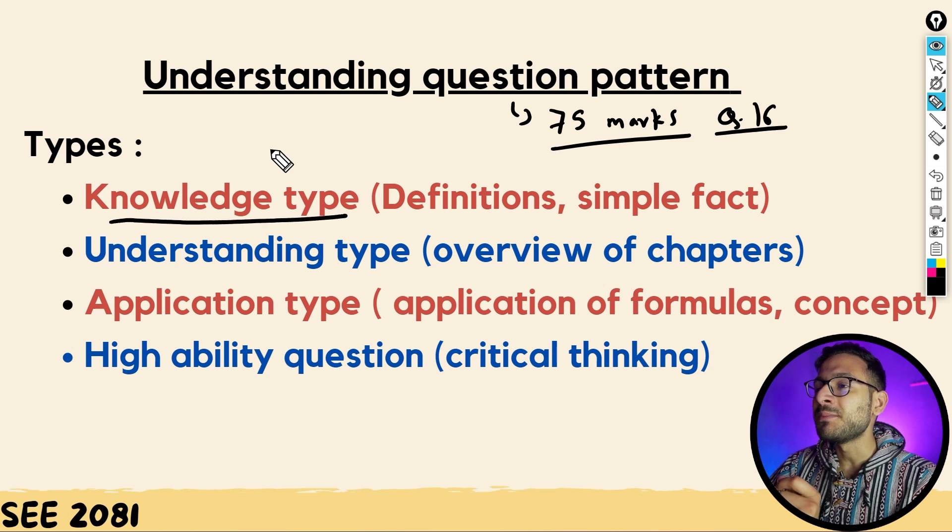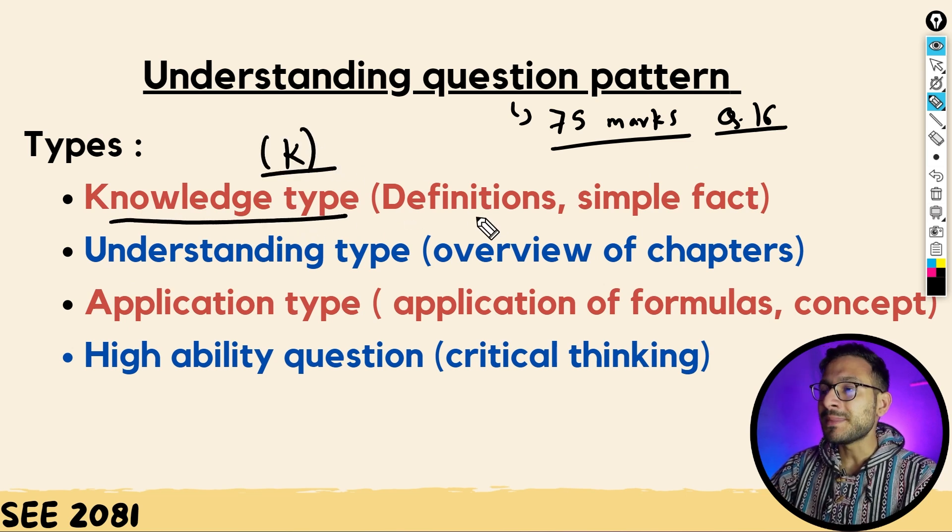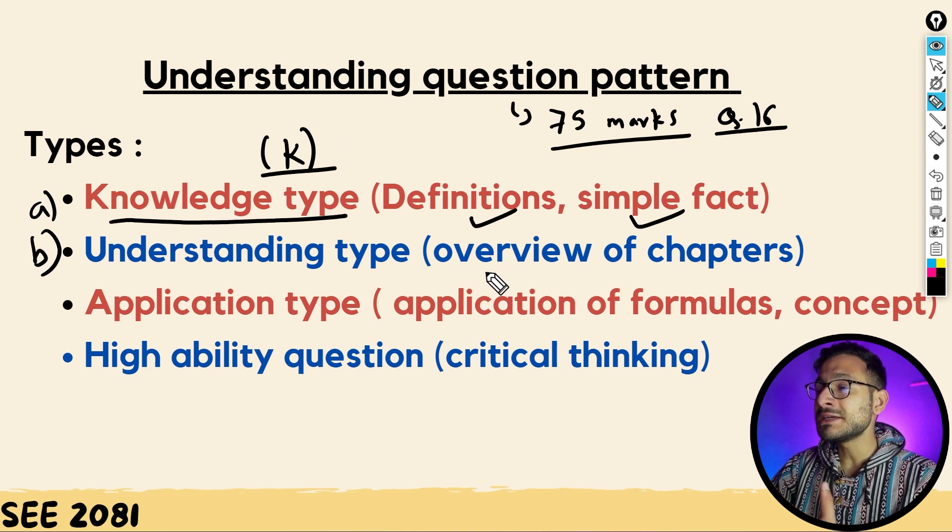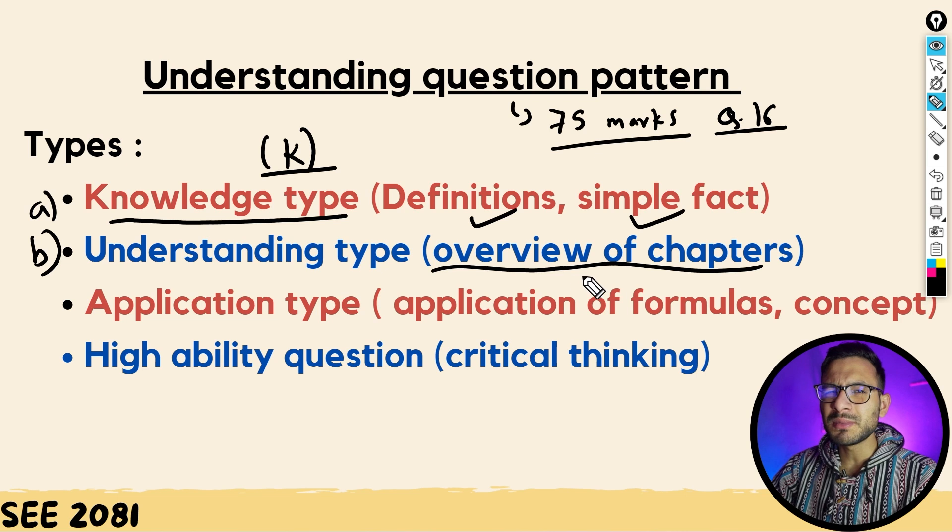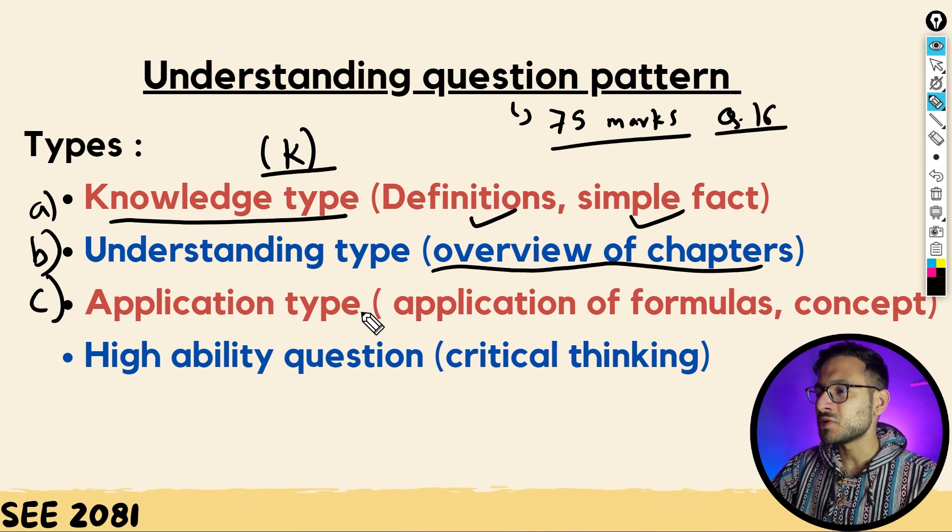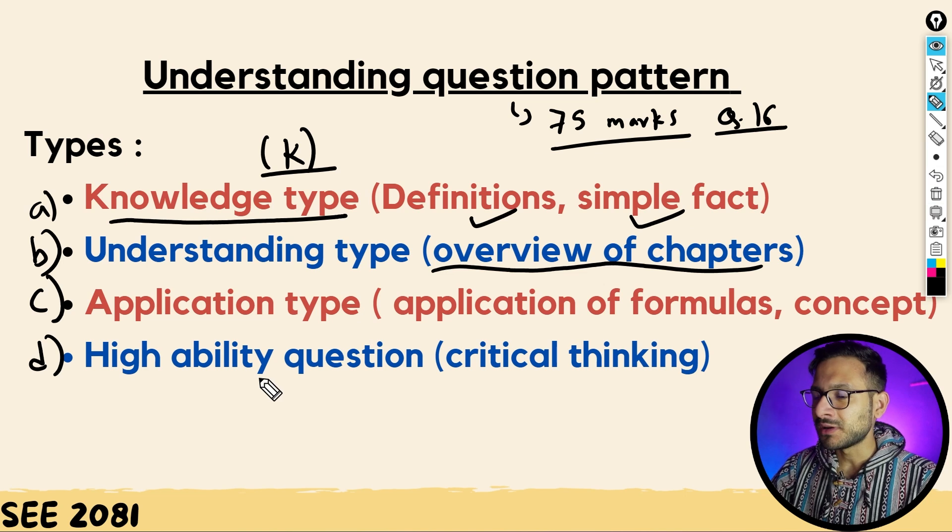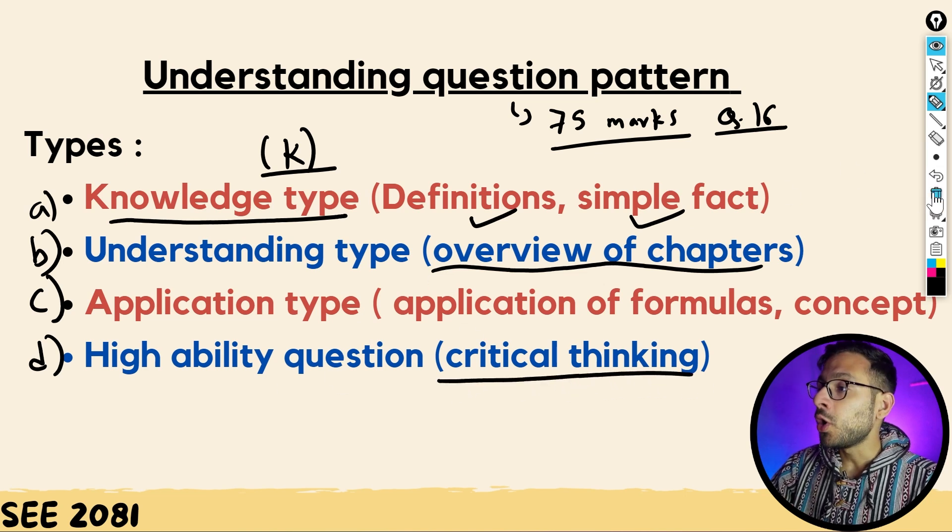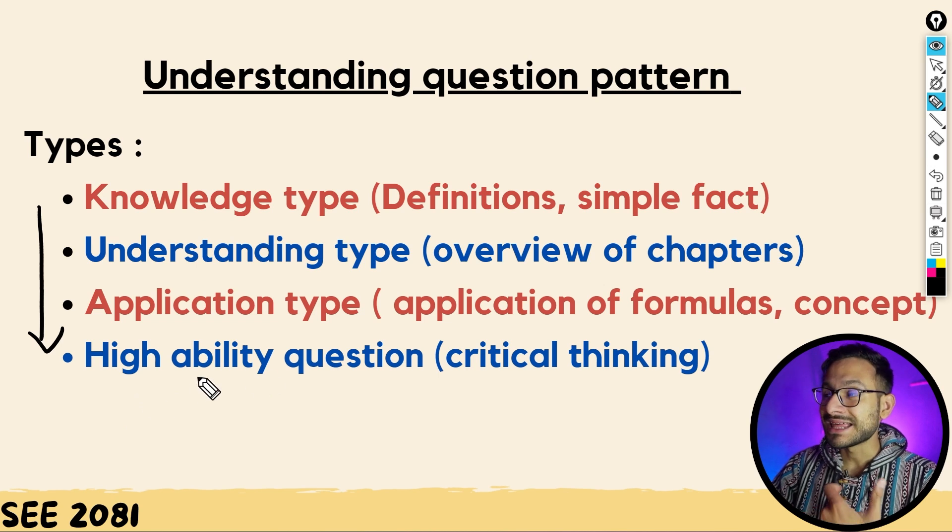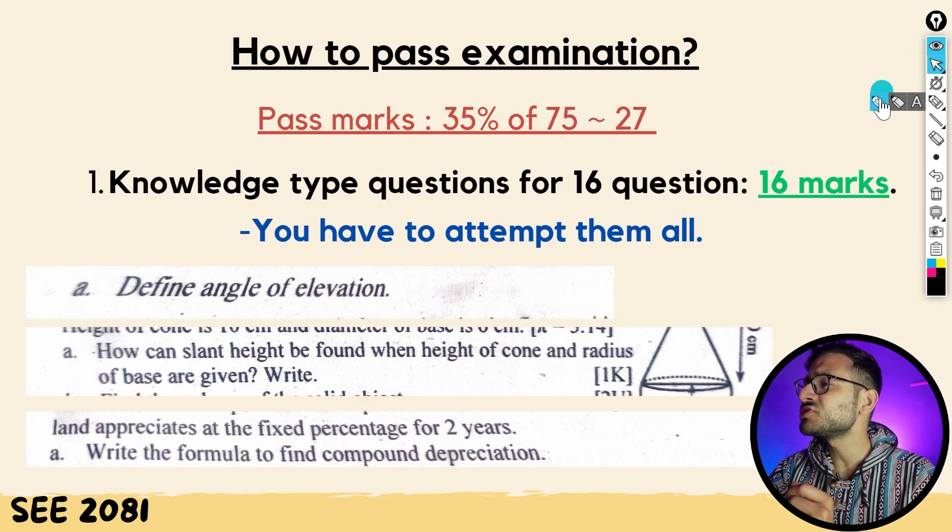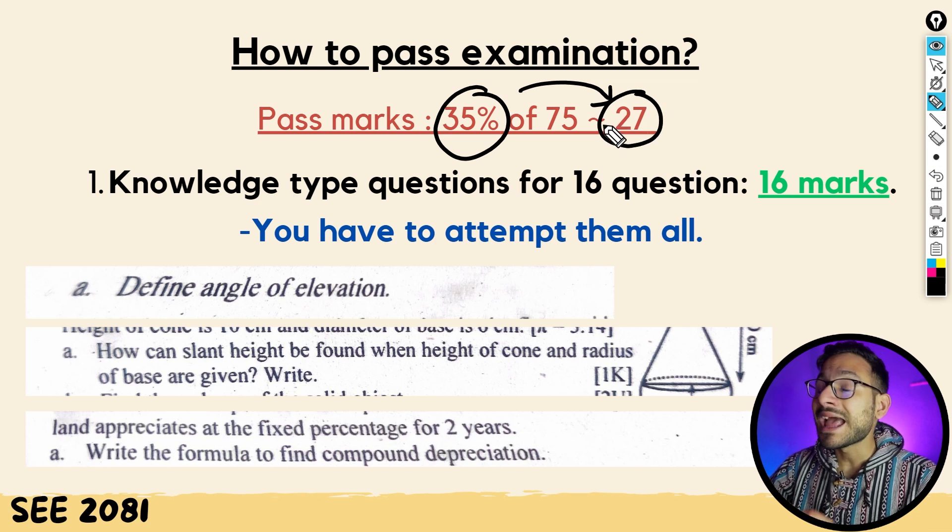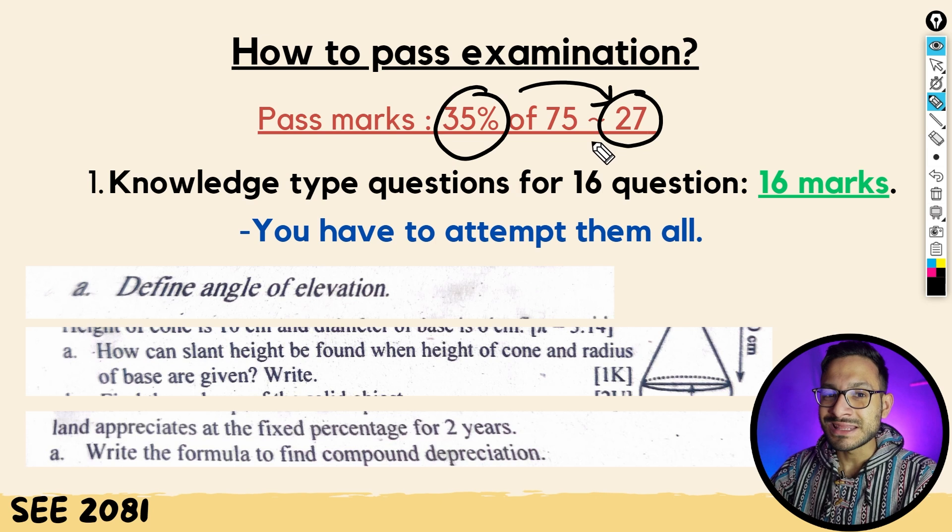Knowledge type questions are basically definitions and simple facts. Understanding type questions involve overview of chapters. Application type questions involve application of formulas and concepts. High ability questions require critical thinking. These question types are arranged in ascending order of difficulty. The pass marks are 35% of 75, which is equivalent to 27 marks, which would be easy to achieve in comparison to the entire paper of 45 marks.